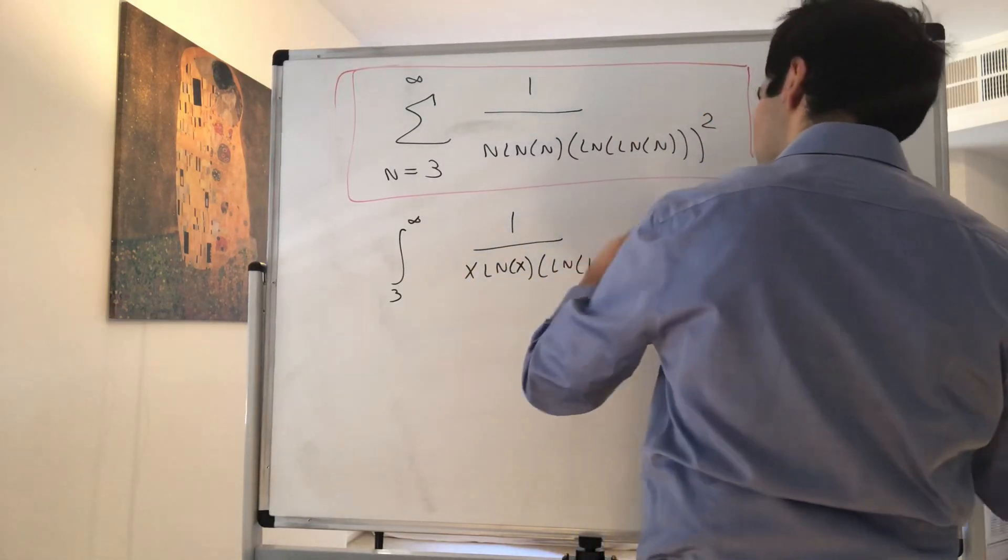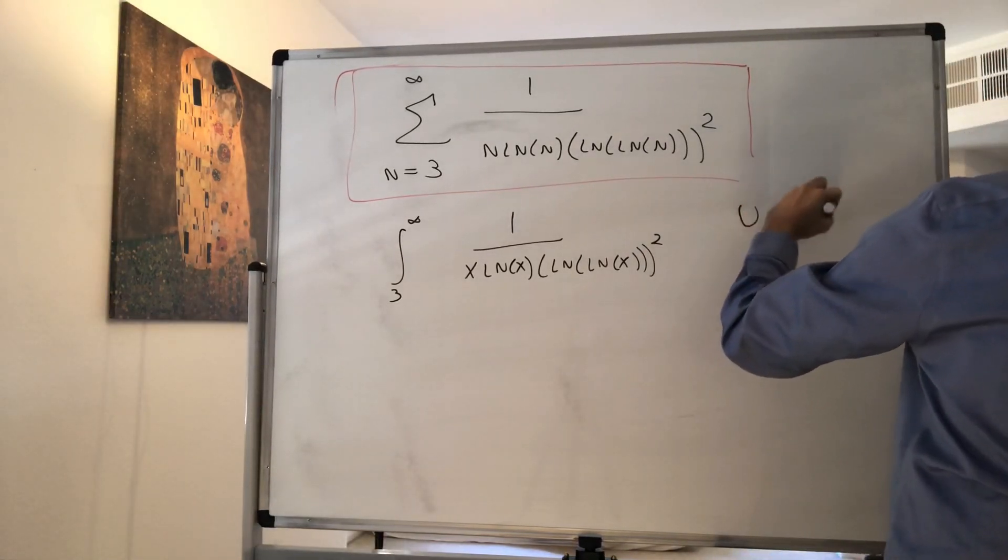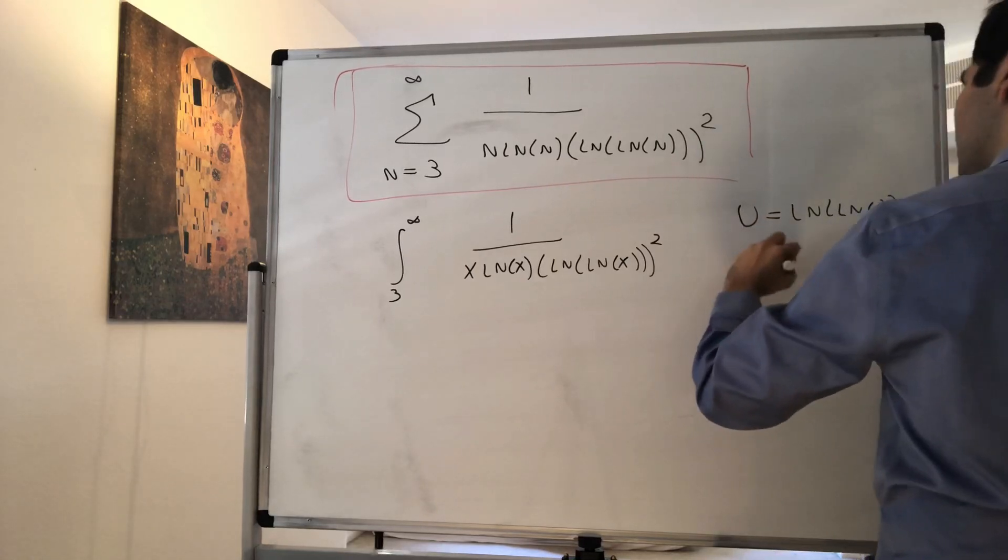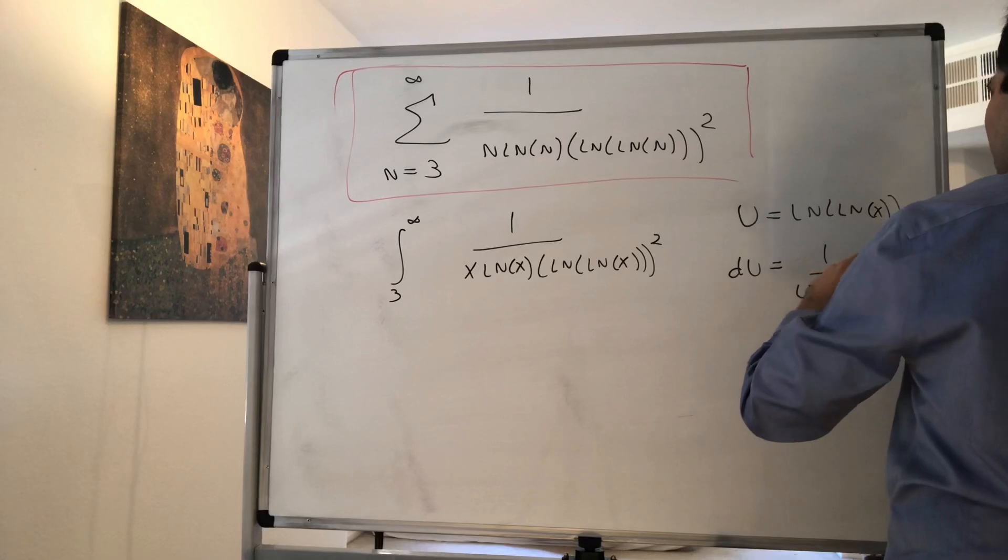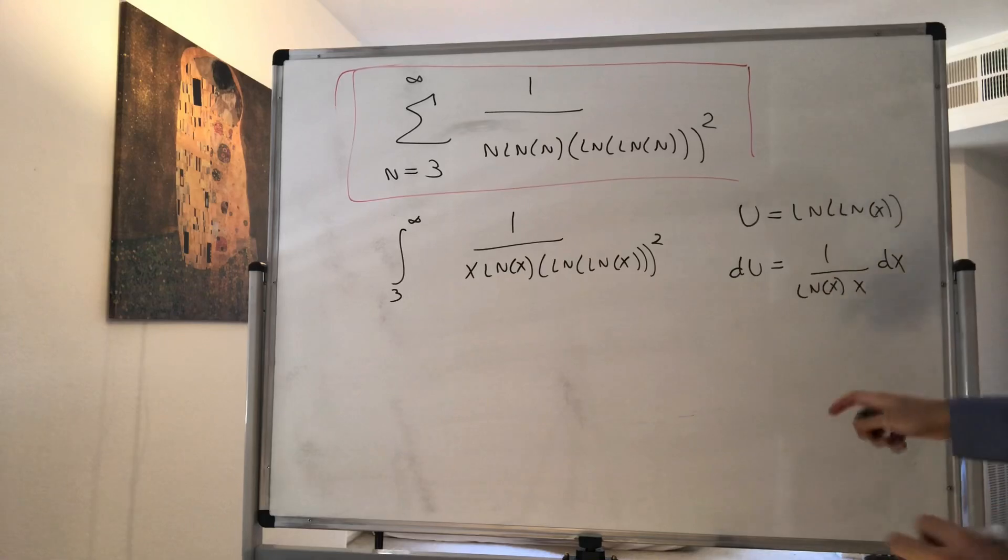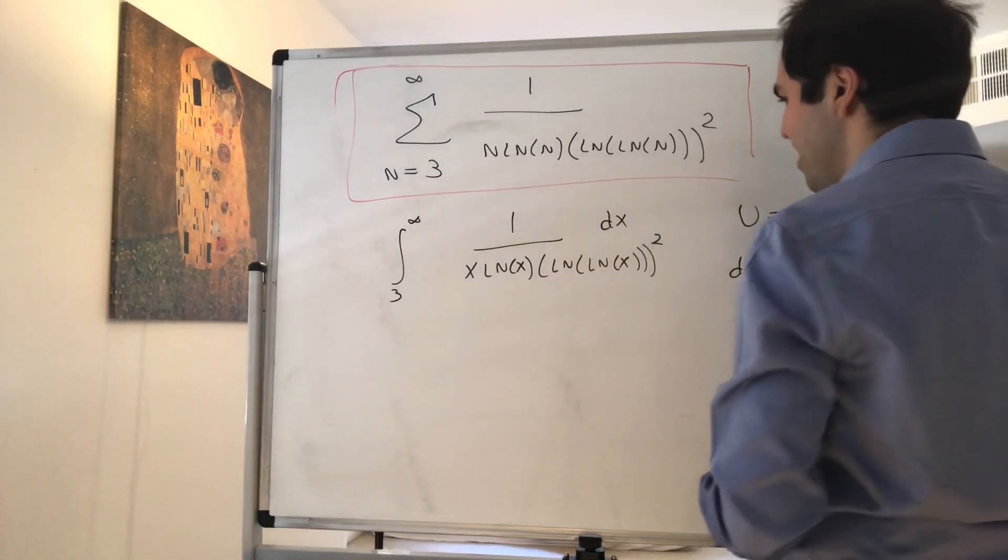So let's just use the u sub, u is ln of ln of x. So du is 1 over ln of x times 1 over x dx. So using the chain rule, and therefore this goes precisely here, so I forgot the dx, how embarrassing.